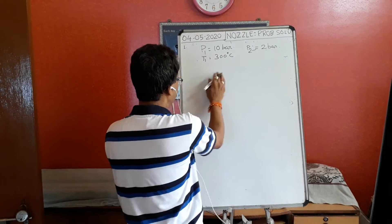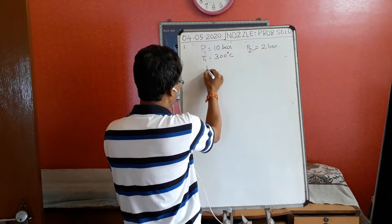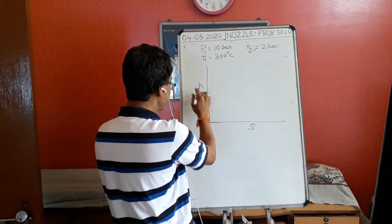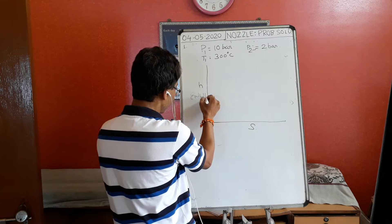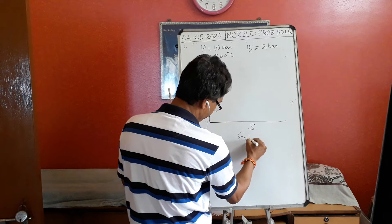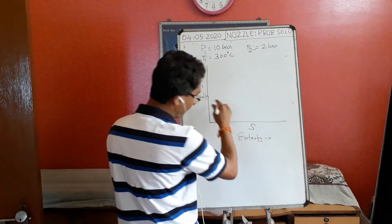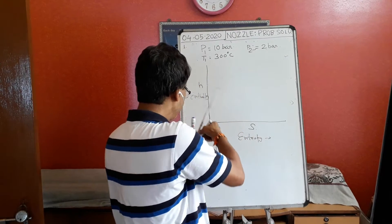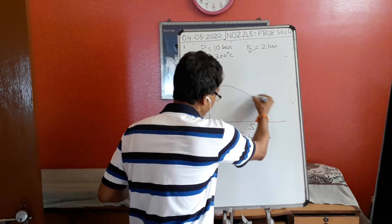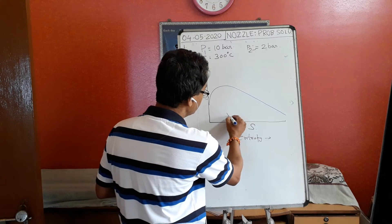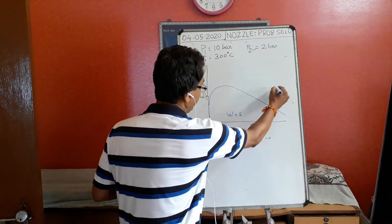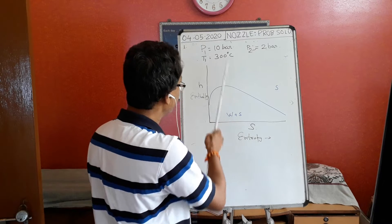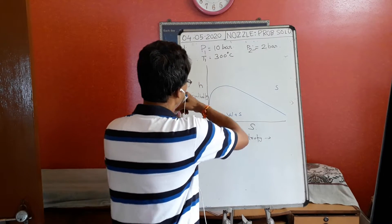In nozzle problems it is better to use the H-S diagram. The first step is to draw the enthalpy H on the y-axis and entropy S on the x-axis. Then I draw the steam dome shape on this diagram. Inside the dome we have water plus steam, and outside to the right is the superheated steam region.